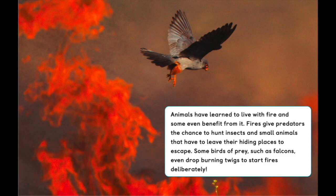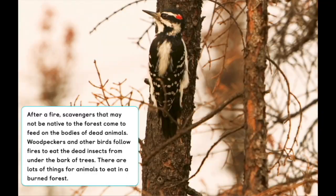Fires give predators the chance to hunt insects and small animals that have to leave their hiding places to escape. Some birds of prey, such as falcons, even drop burning twigs to start fires deliberately. After a fire, scavengers that may not be native to the forest come to feed on the bodies of dead animals. Woodpeckers and other birds follow fires to eat the dead insects from under the bark of trees.